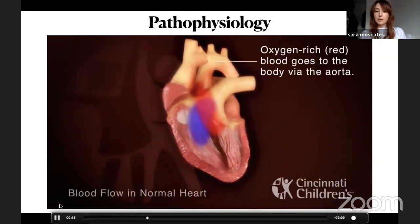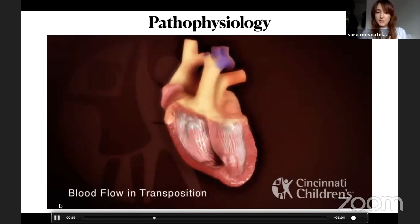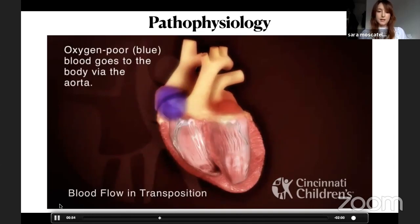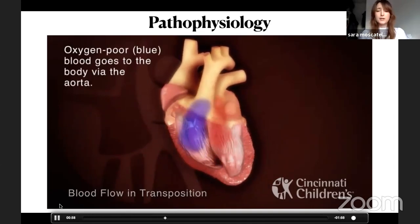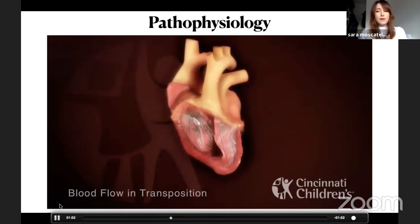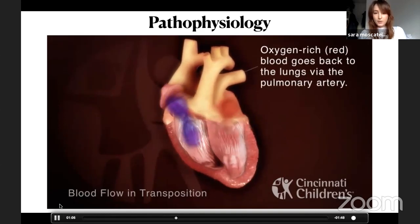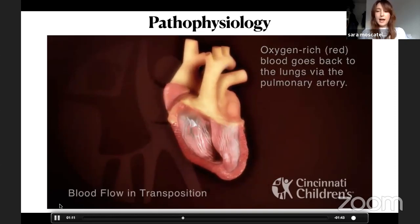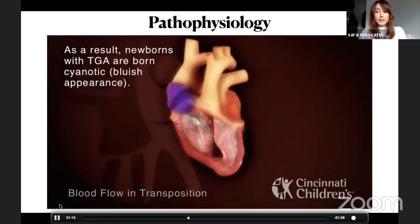In normal circulation, venous blood arrives at the right ventricle and goes to the lungs, while oxygenated blood goes to the aorta. In TGA, the opposite occurs: venous blood from the body arrives at the right ventricle and goes into the aorta, while oxygenated blood from the pulmonary veins enters the left ventricle and goes to the pulmonary artery — creating two parallel circulations that cannot guarantee life.